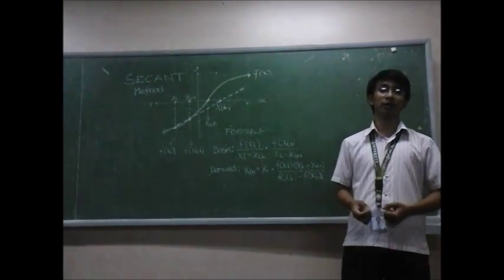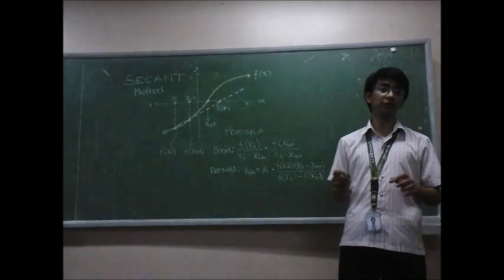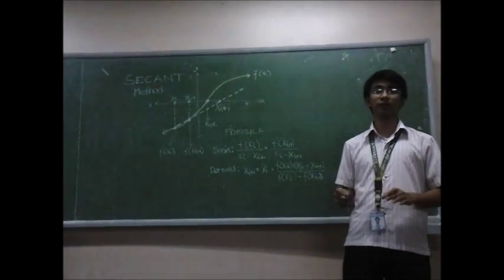The secant method has the same algorithm as the false position method. The only difference is how they choose the next interval for the next iteration.